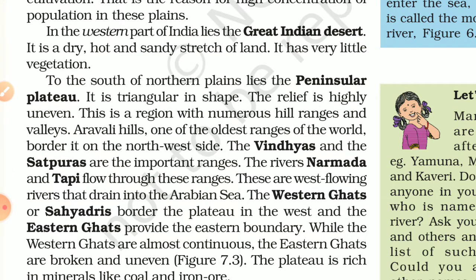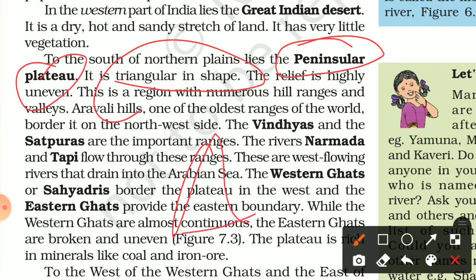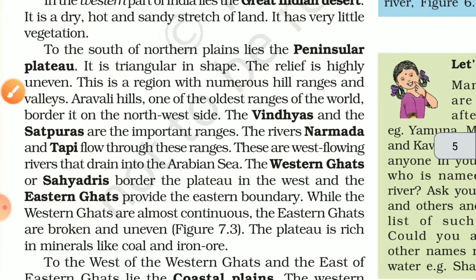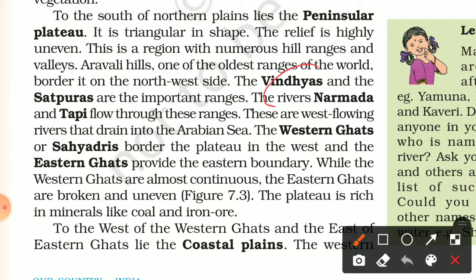To the south of the northern plains is the Peninsular Plateau. It is triangular in shape, and the relief is uneven. This is a region with numerous hill ranges and valleys. The Aravalli Hills are one of the oldest ranges in the world, located on the northwest side.